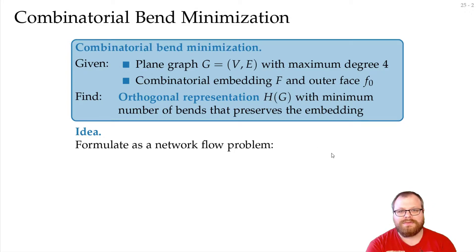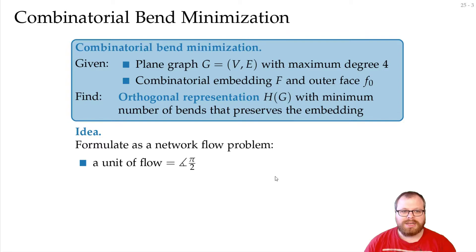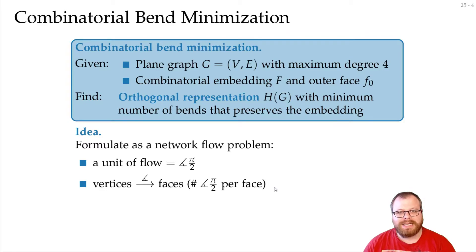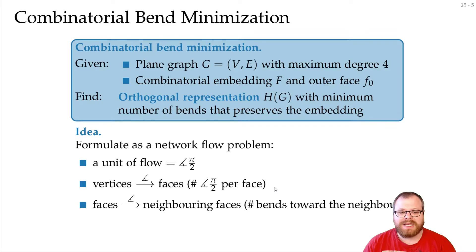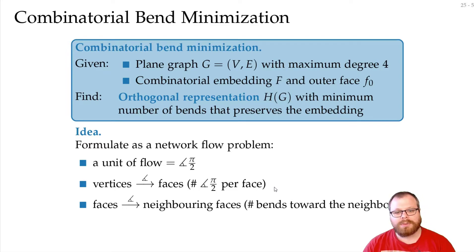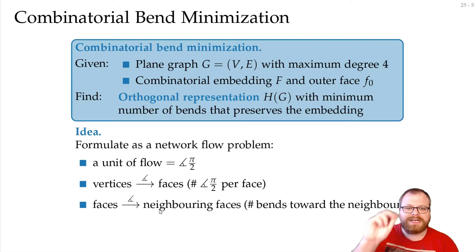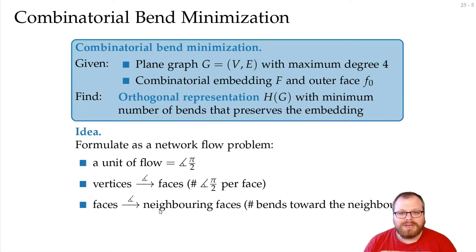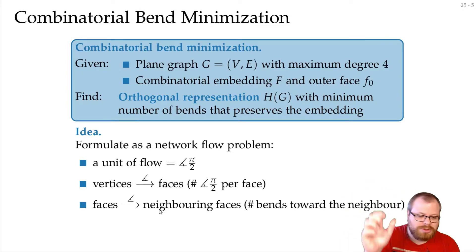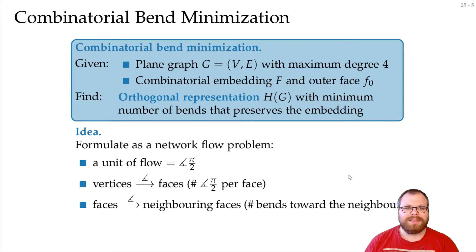The idea is that the flow represents the bends. We have one unit of flow for every π/2 (90-degree) angle. We have edges from vertices to faces counting the angles between edges at the vertices, and flows from faces to other faces counting the bends on the shared edge — and the bend count must be the same on both sides. If we have a flow of 2 going from one face to a neighboring one, that means two right bends on one side and two left bends on the other. We can model this very well with flows.